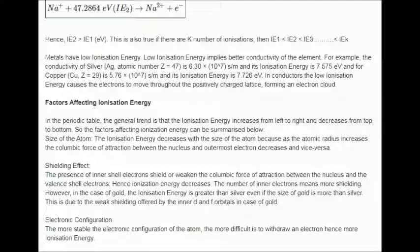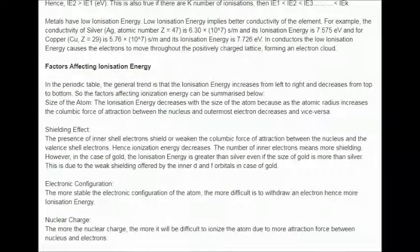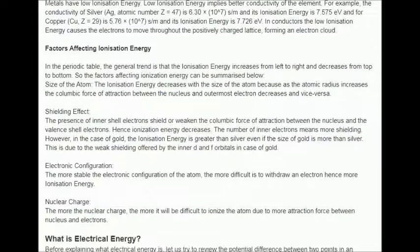Electronic configuration: The more stable the electronic configuration of the atom, the more difficult is to withdraw an electron hence more ionization energy. Nuclear charge: The more the nuclear charge, the more it will be difficult to ionize the atom due to more attraction force between nucleus and electrons.